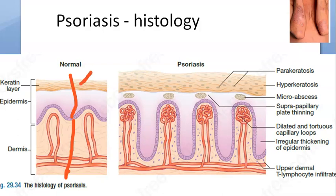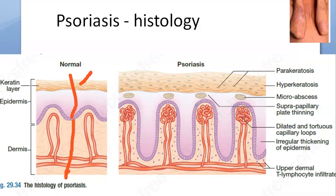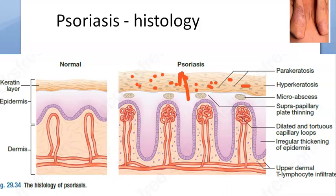What you're seeing here is hyperproliferation — keratinocytes are hyperproliferating. There is abnormal differentiation and a retention of nuclei, so you can see nuclei in the keratin layer. Because there is excess proliferation, these keratinocytes are just dividing too many times. Now there are a lot of keratinocytes and they are retaining nuclei in the stratum corneum.